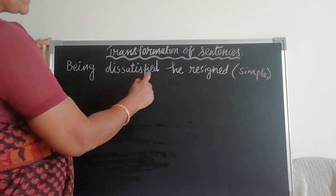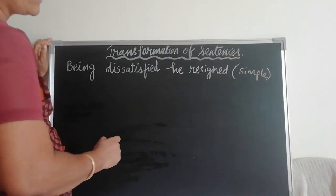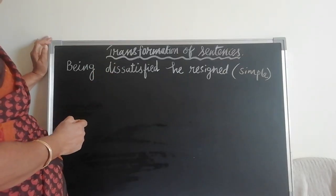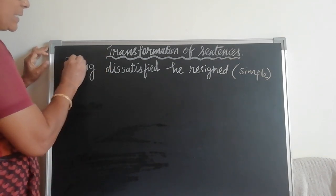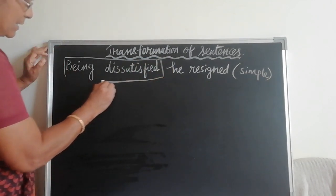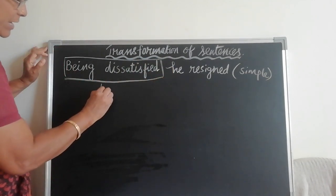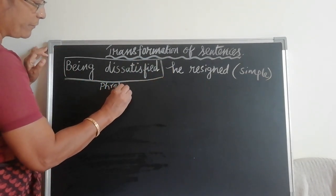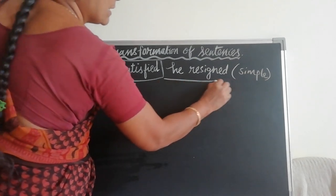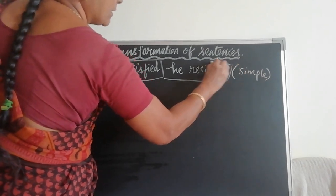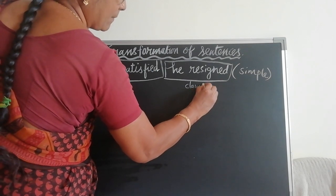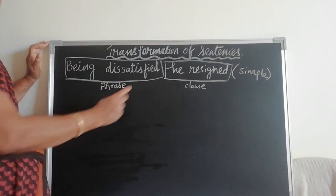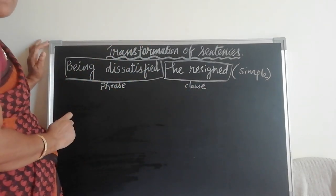Being dissatisfied, he resigned. We have to change the sentence into compound and complex sentence. 'Being dissatisfied' is a phrase, and 'he resigned' is a clause — it is a main clause. A phrase with a main clause makes a simple sentence.